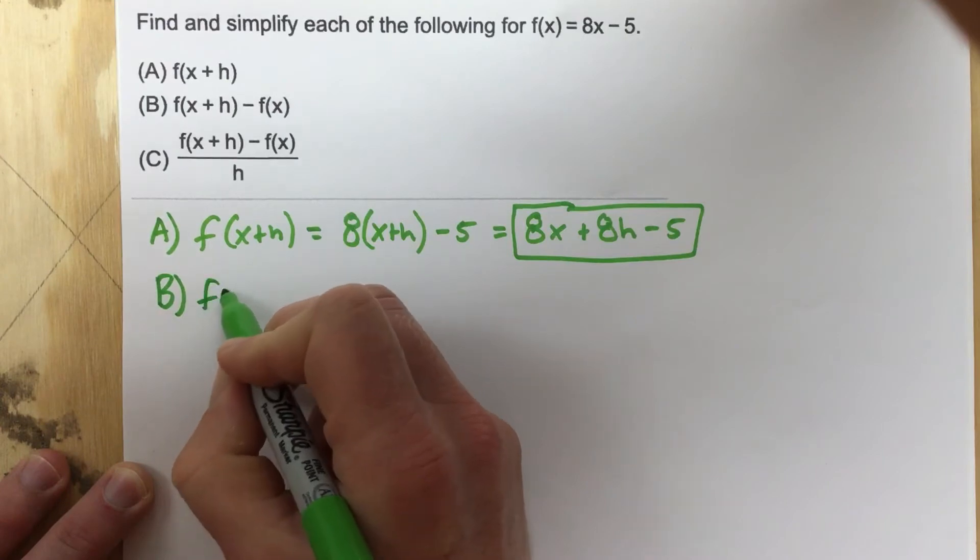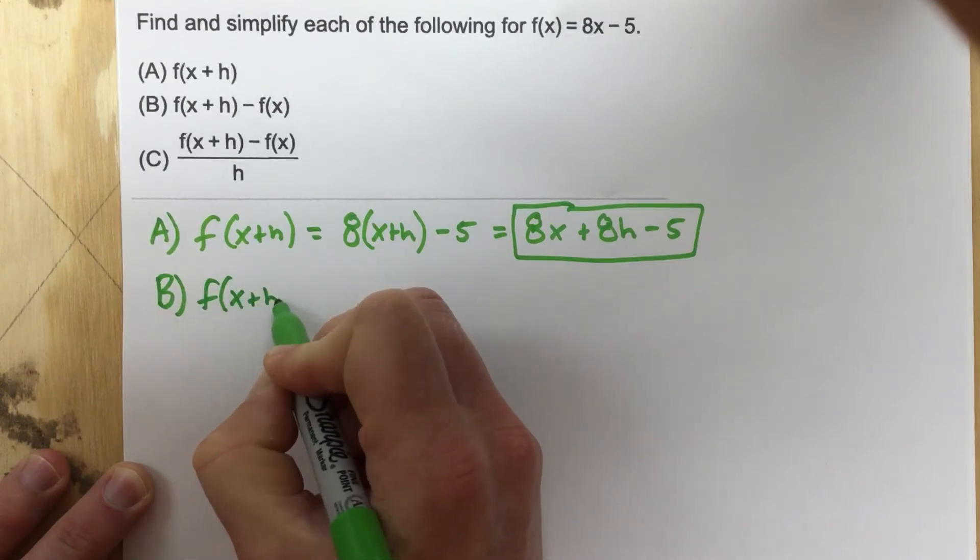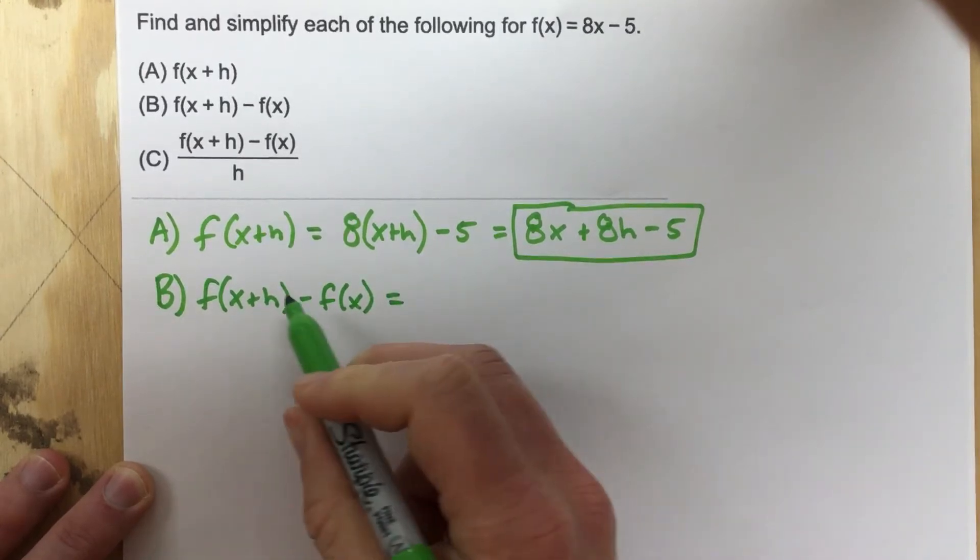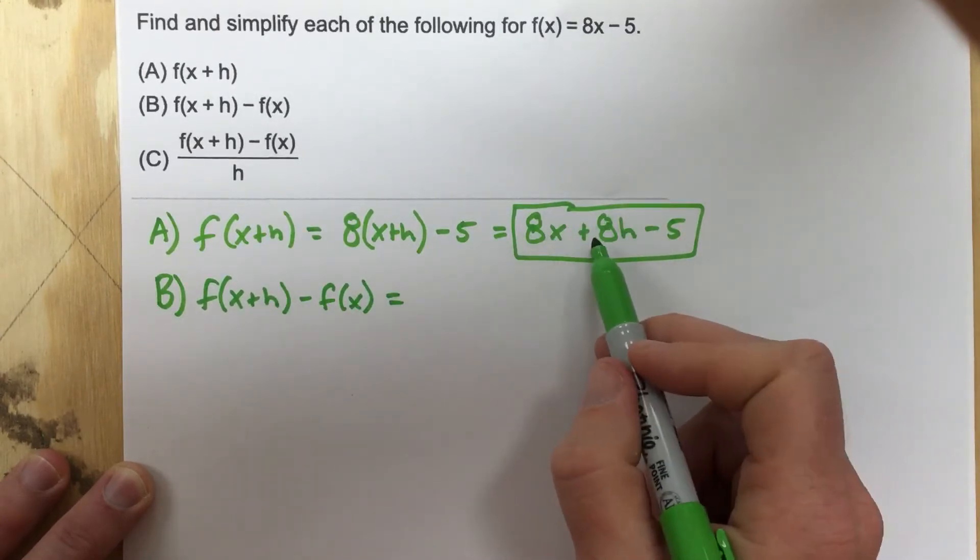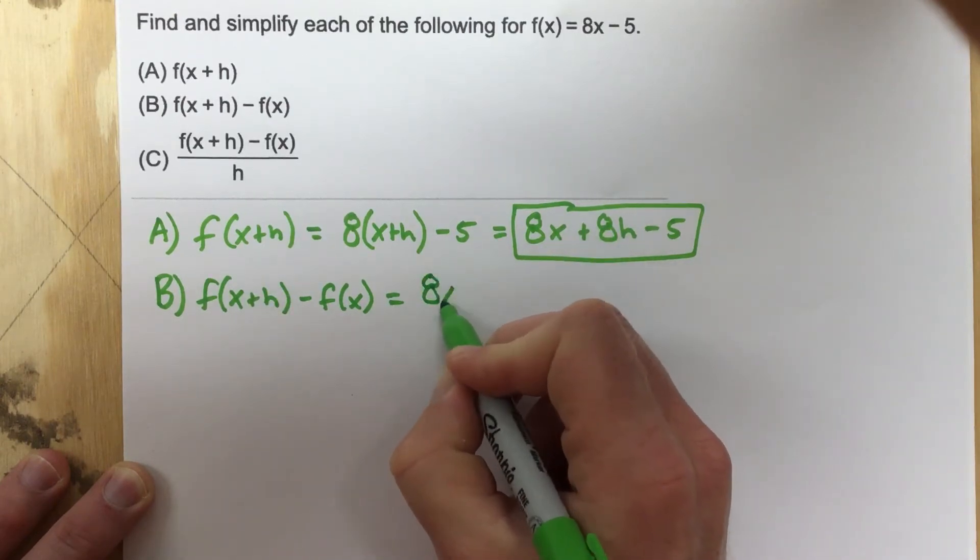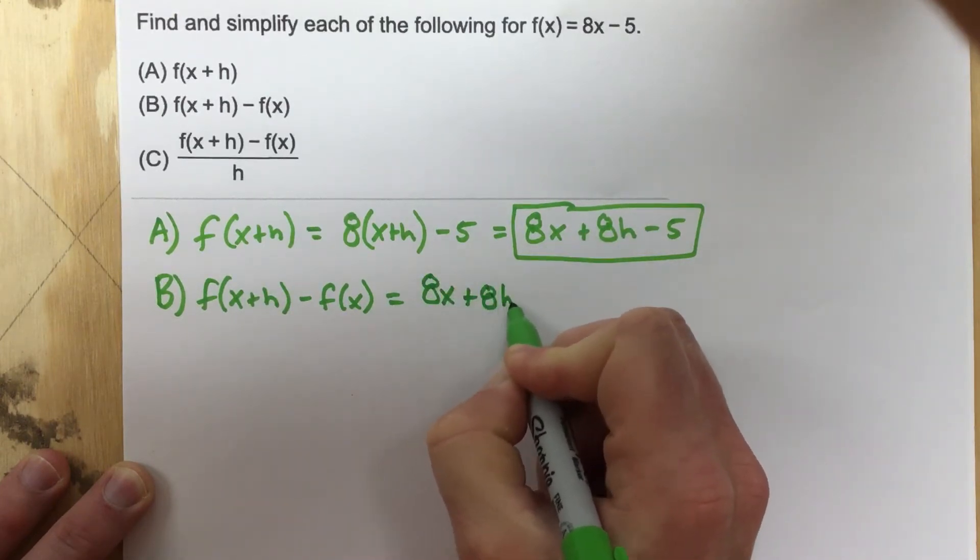they want us to do f(x + h) minus f(x). So they want us to take the initial part from part A, f(x + h), so we can write 8x plus 8h minus 5.